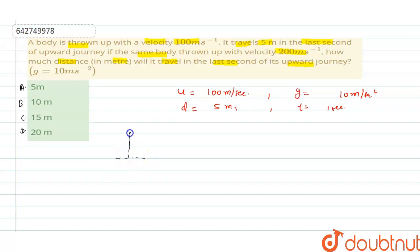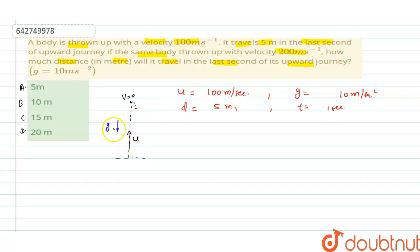Suppose we have a ground surface and we are throwing the body in the upward direction with velocity u. We know that it will reach the highest point, where the velocity becomes zero, and then it starts to come back downward. Since g is always downward, both are vector quantities — if we take u upward and g downward, one is positive and one is negative. In the last one second, the distance traveled is d.